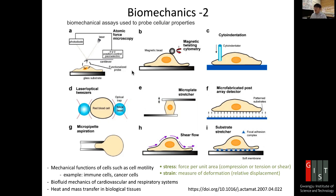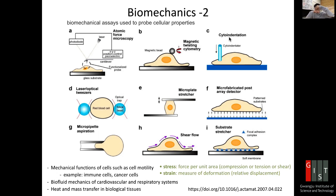We can probe cellular mechanical properties using various techniques. Atomic force microscopy uses a cantilever with a functionalized probe to push or pull on the cell surface with nanometer accuracy. Magnetic beads can be attached to a cell and twisted using an external magnetic field to measure the cell's mechanical response. Cytoindentation involves poking the cell to measure its mechanical properties.